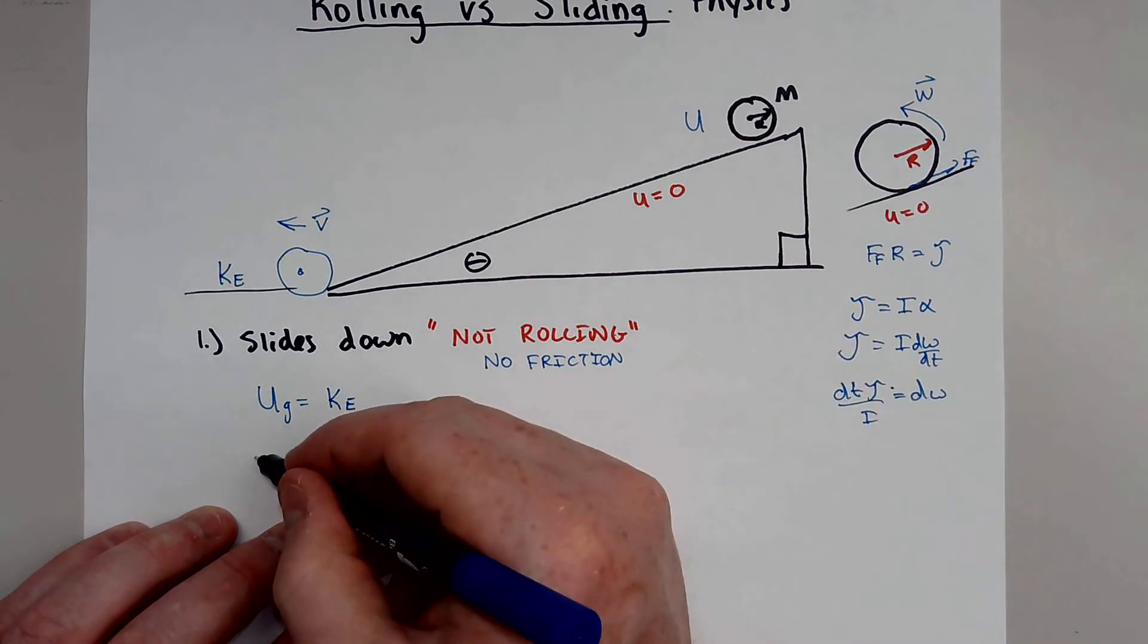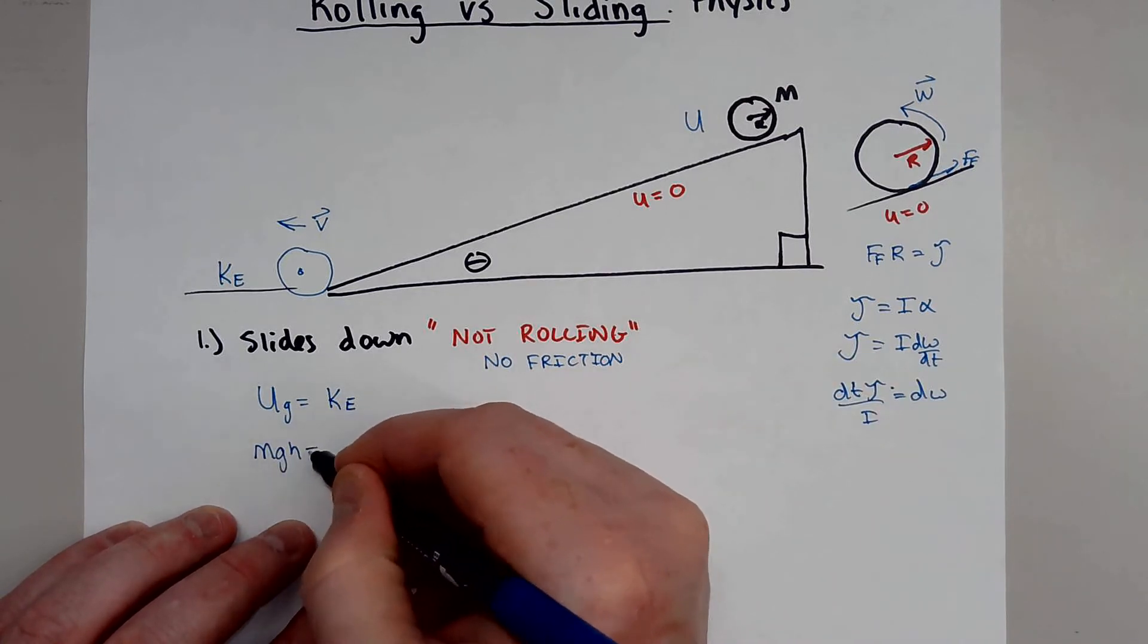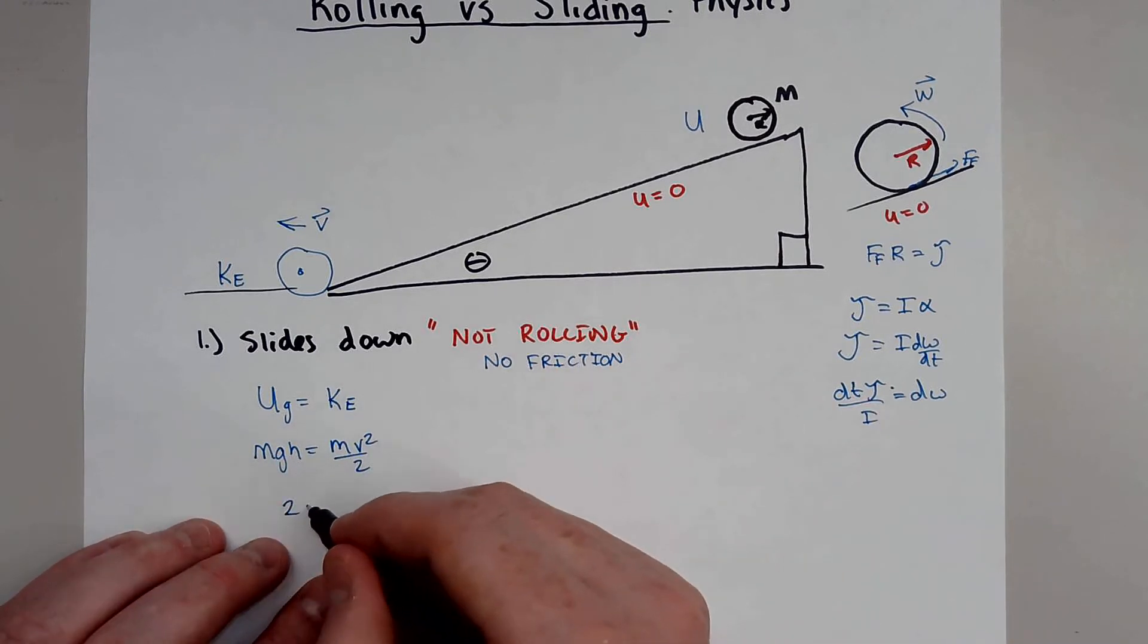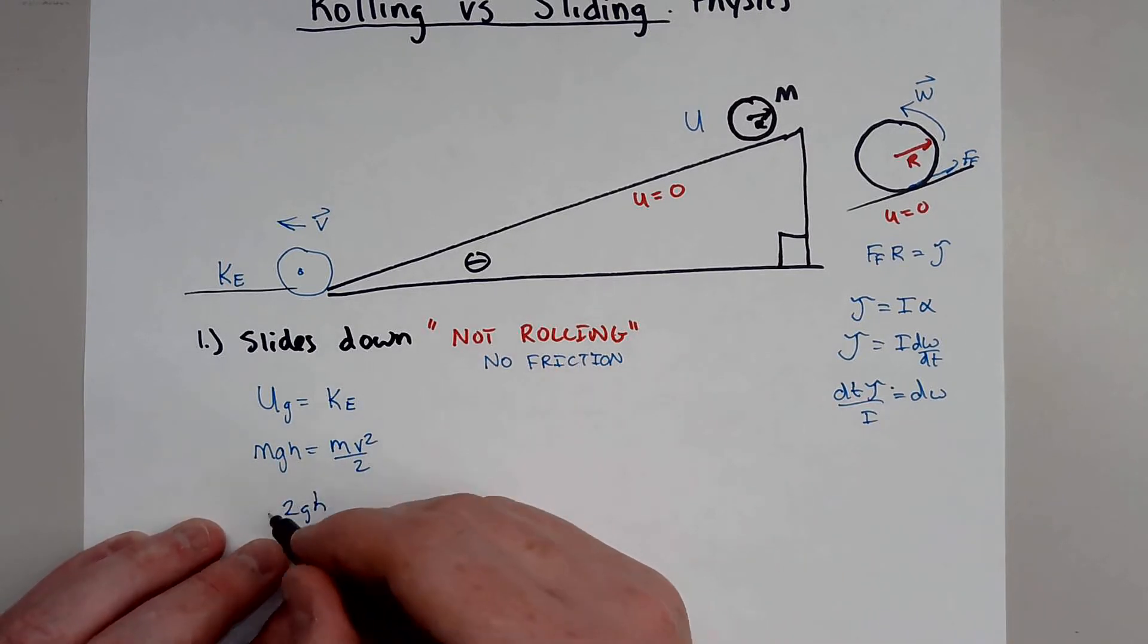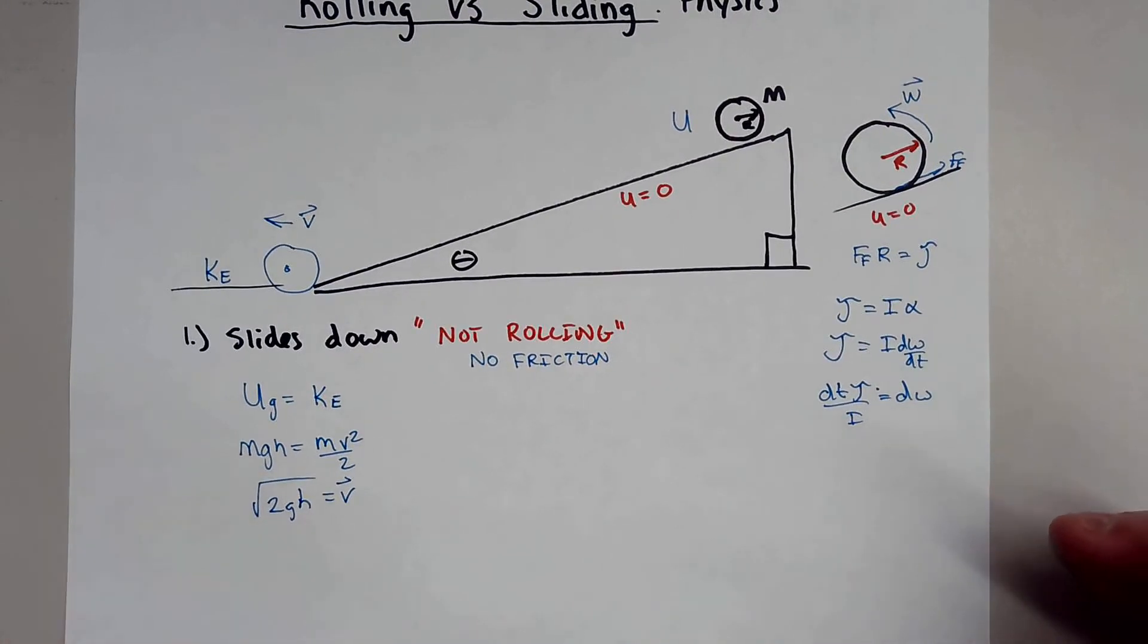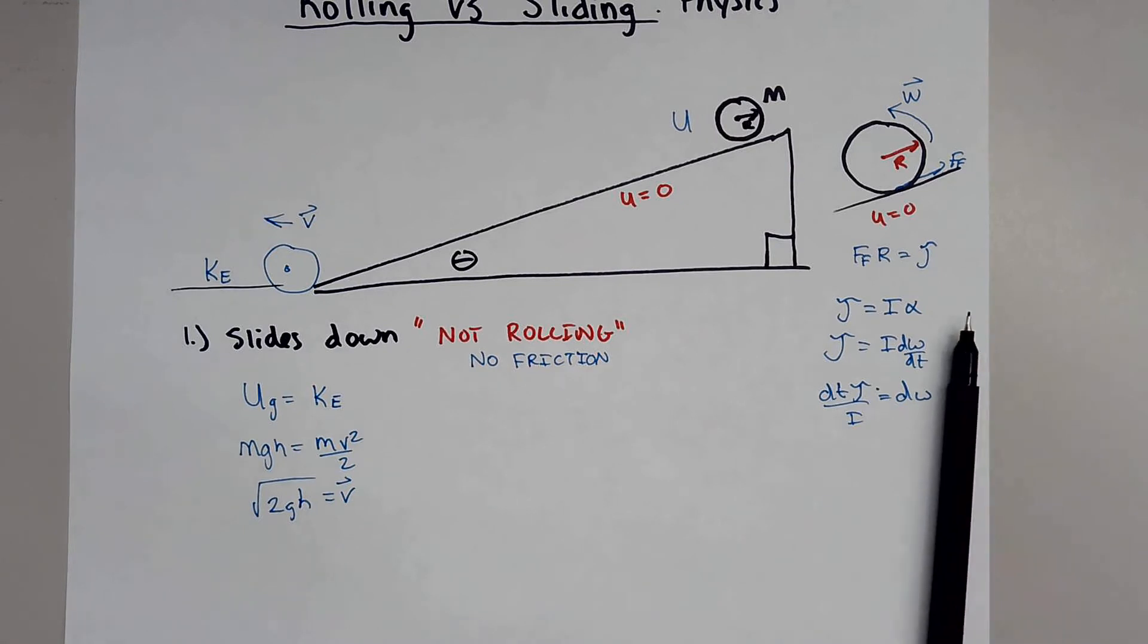So if you did this, your potential energy at the top would just equal your translational kinetic energy at the bottom. So that would just be MGH equals MV squared all over 2. And then you could just solve for that V, which would be square root of 2GH. And that's kind of simple. And this is something that's kind of covered in any traditional or any regular conservation of energy thing.